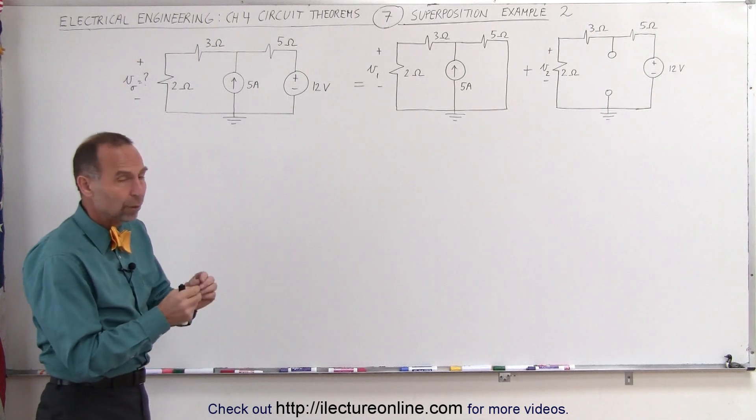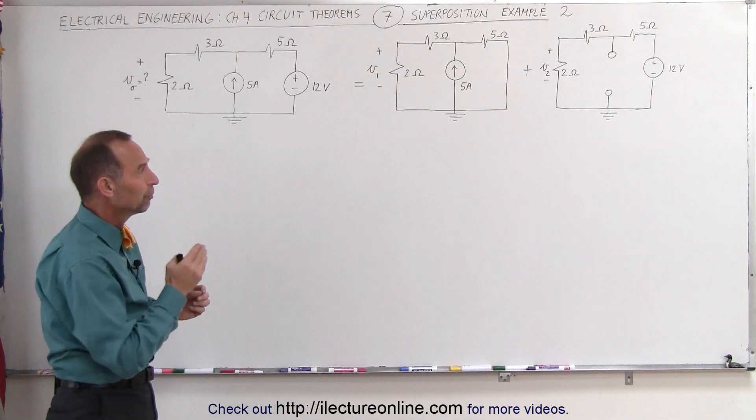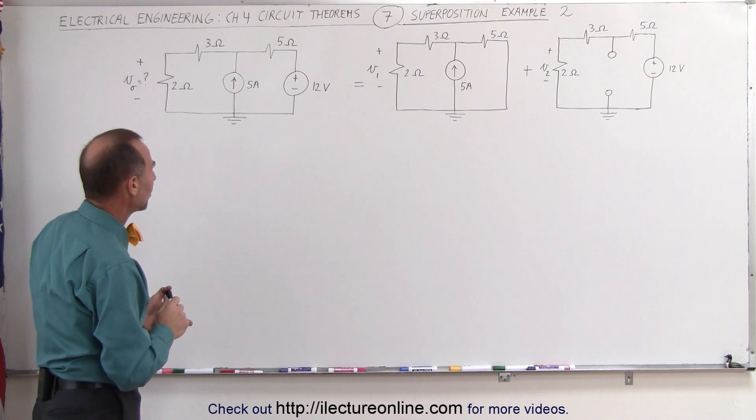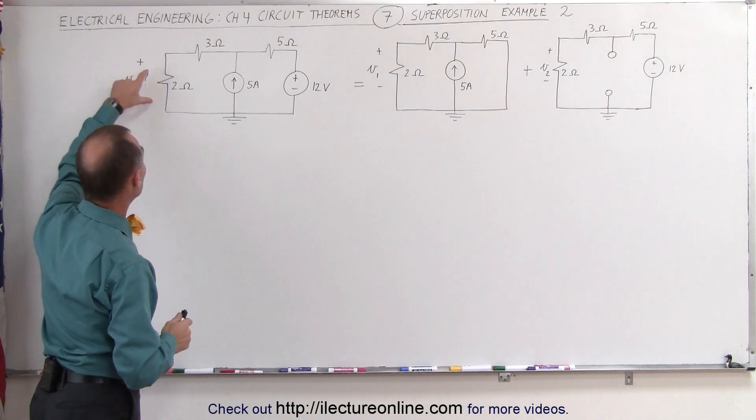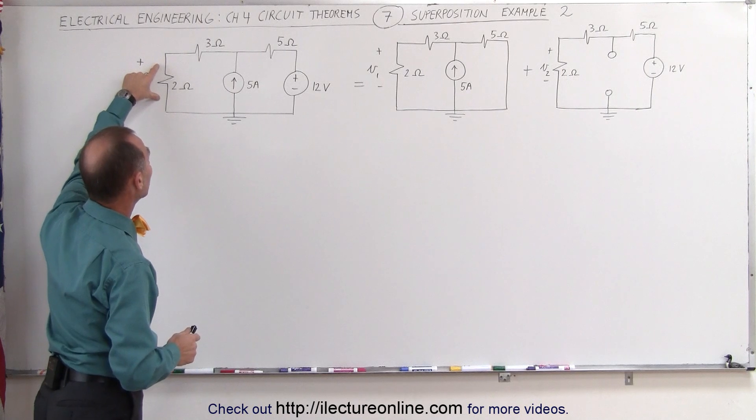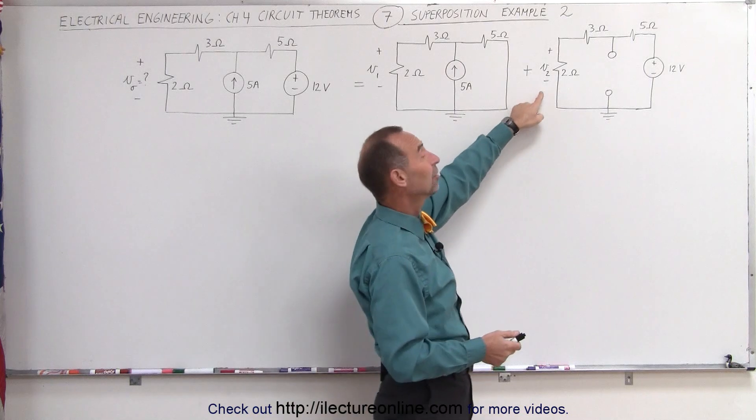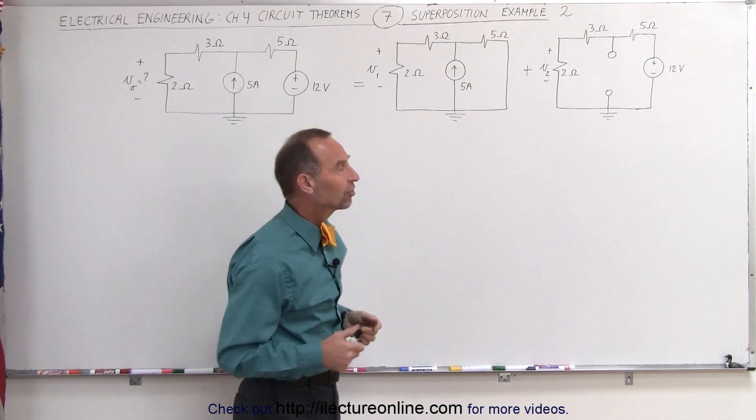By removing a current source, we open the circuit. By removing the voltage source, we short the circuit where the voltage source used to be. At any rate, what we're trying to do is find the voltage across the 2 ohm resistor here and we're going to do that by finding it in this circuit here, then by finding it in this circuit, then simply doing the algebraic sum.